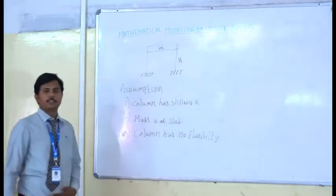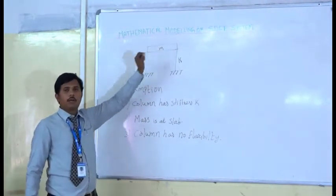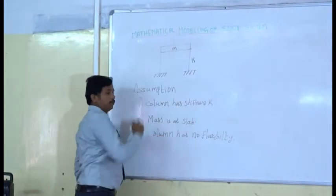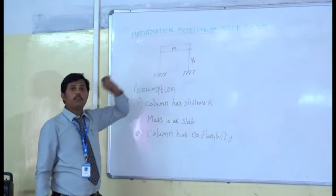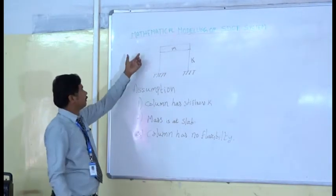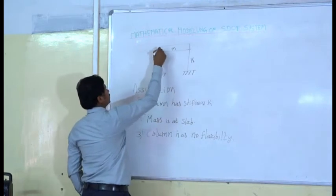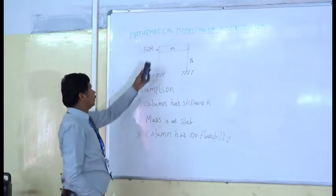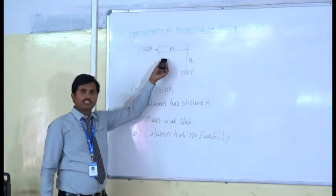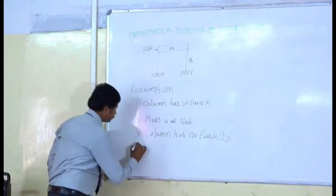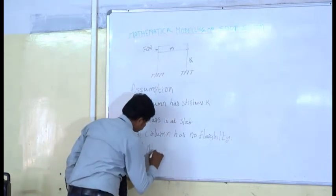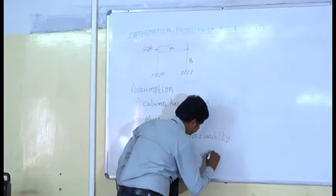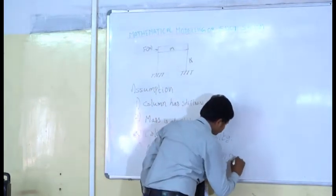During construction, the column and the beam are built at the same time. So, the column and the beam will act monolithically. If the external forces act at slab level, there is no rotation at beam column joint.